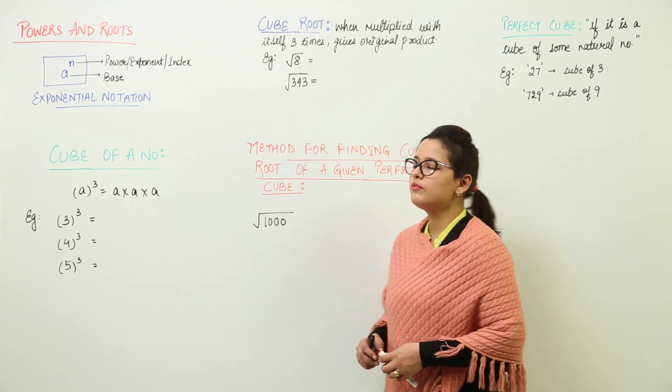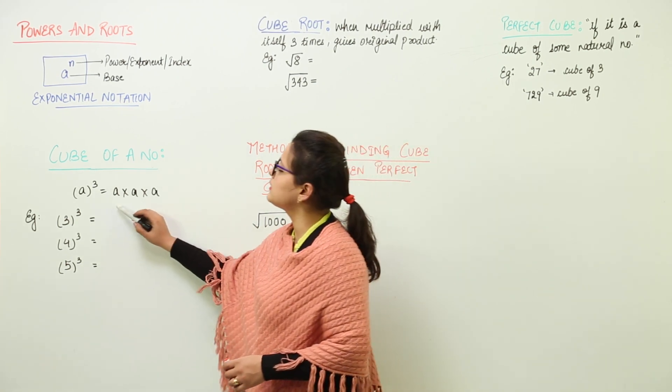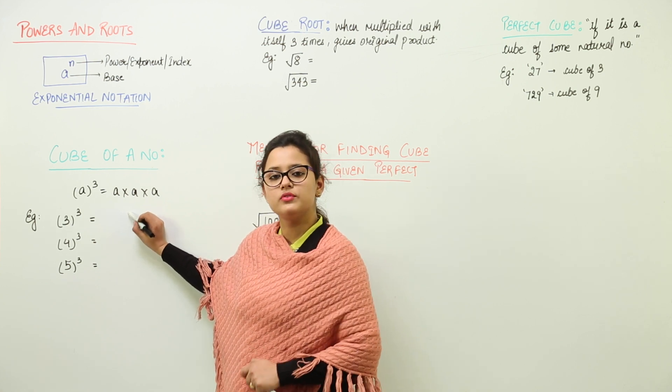Now let's do the cube of numbers. Cube is nothing but multiplying the number with itself 3 times.